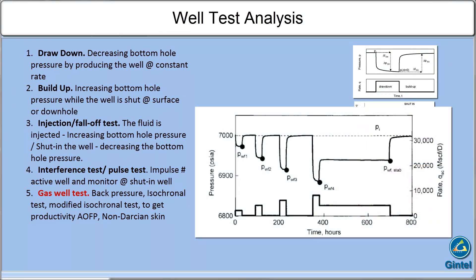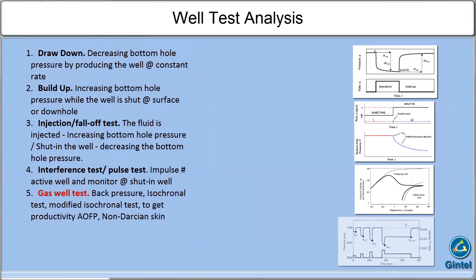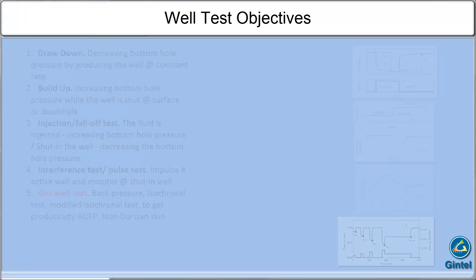And finally, gas well tests. They are basically combinations of drawdown and buildup. These are backpressure, isochronal tests, and modified isochronal tests. All of them are aimed to get productivity, absolute open flow, and non-Darcyan skin.